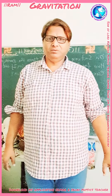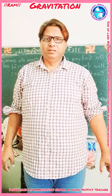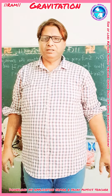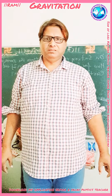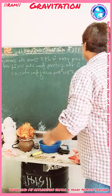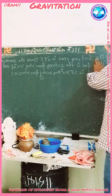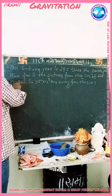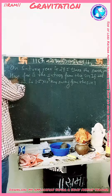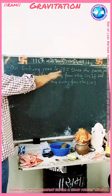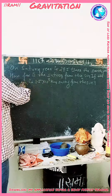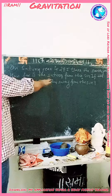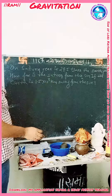Today, number C is a numerical problem. The numerical is based on Kepler's law of planetary motion. The numerical is solved this way, just as you can see here. On Saturn, the time period is 29.5 times that of the Earth. How far is Saturn from the Sun, if the Earth is 1.5 into 10 to the power 8 km away from the Sun?